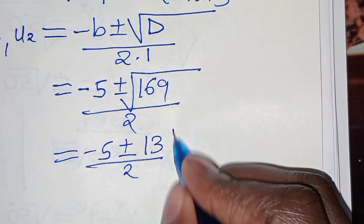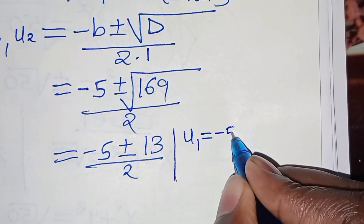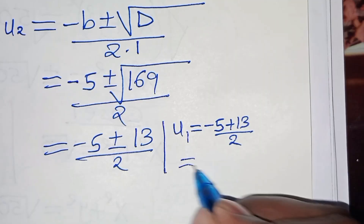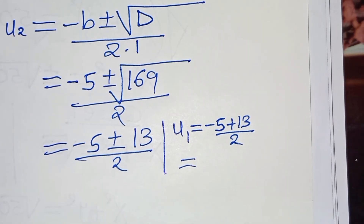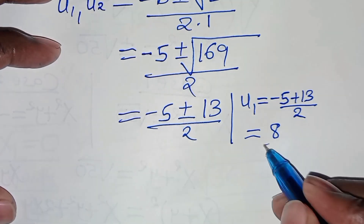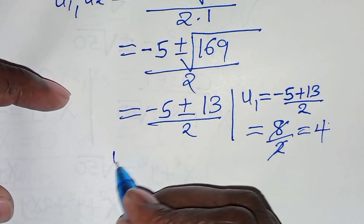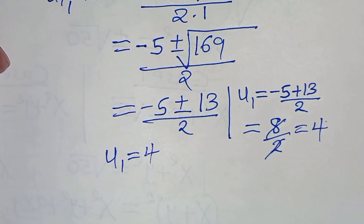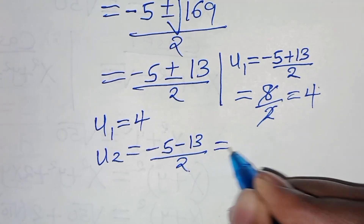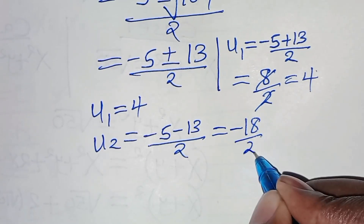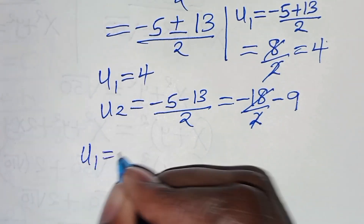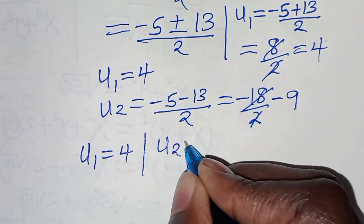This implies that u1 equals minus 5 plus 13 divided by 2, which is 8 over 2, so u1 equals 4. And u2 equals minus 5 minus 13 divided by 2, which is minus 18 over 2, so u2 equals minus 9.